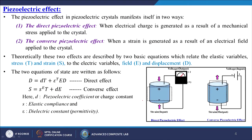The first is called the direct piezoelectric effect — when electrical charge is generated as a result of mechanical stress applied to the crystal. The second is the converse piezoelectric effect — when a strain is generated as a result of an electrical field applied to the crystal. If you give pressure or load, it generates electricity; and simultaneously, if you give electricity to those materials, the materials will be under stress or strain, changing their shape and size — some kind of deformation happens inside the material.